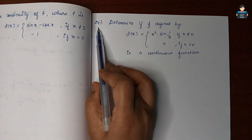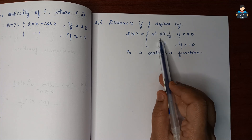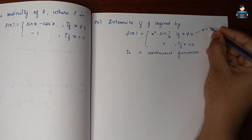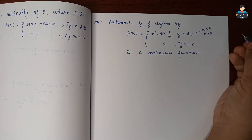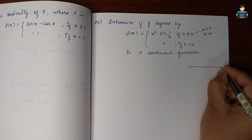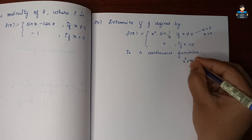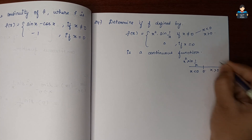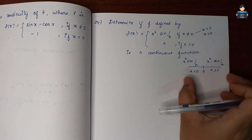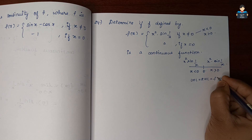Next, Question 24: Determine if f defined by f(x) = x² sin(1/x) for x ≠ 0, and f(0) = 0, is continuous. For x < 0 and x > 0, f(x) = x² sin(1/x), and at x = 0, f(0) = 0.